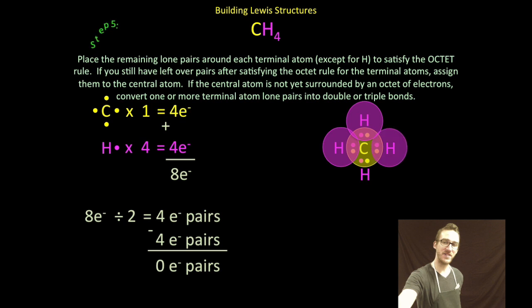Now hydrogen doesn't have an octet. However, it has completed its valence level. And by sharing its lone electron with one of the carbon atom's electrons, it completes its valence level.